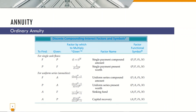Here is our summary table of the factors from the compound interest topic through the annuity. For example, in finding F in compound interest, given P times (1 plus i) raised to n, this quantity is called the single payment compound amount, symbolized as F given P at i percent and n interest periods. Similarly, (1 plus i) raised to n minus 1 over i is called the uniform series compound amount. The next is called the uniform series present worth. The inverse of the uniform series compound amount is the sinking fund, and the inverse of the uniform series present worth is the capital recovery.